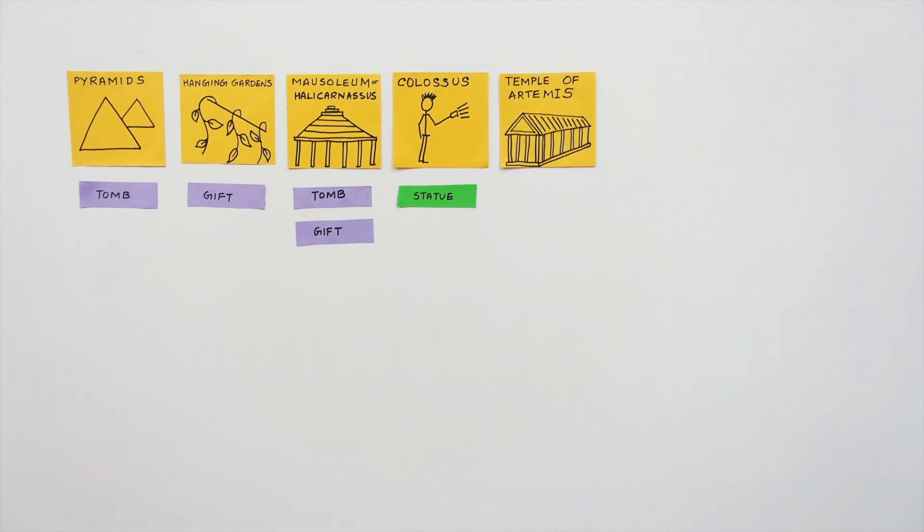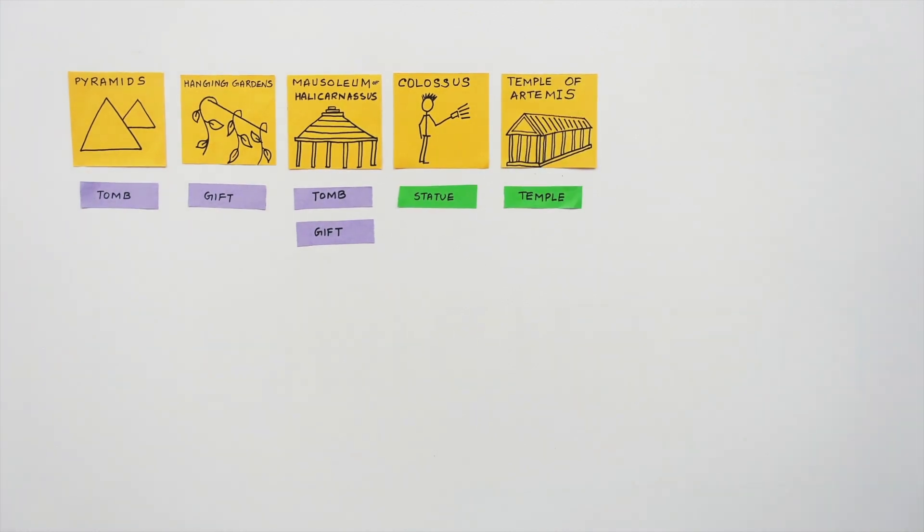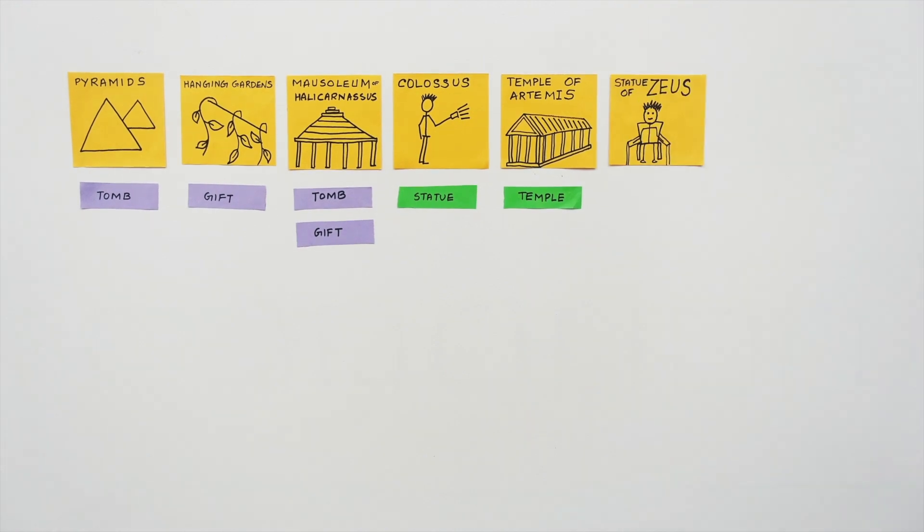The Temple of Artemis was a Greek temple dedicated to the goddess Artemis and built by architect Chersiphron. The Statue of Zeus, the third ancient wonder from Greece, was a giant seated statue sculpted inside the Temple of Zeus by Phidias.